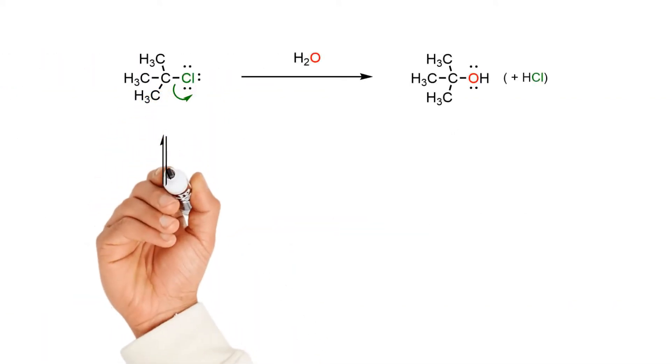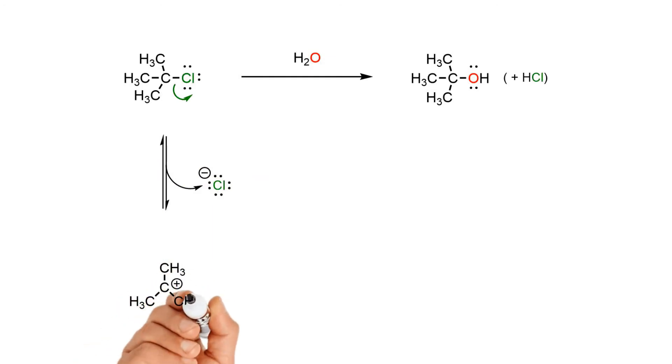Formation of the carbocation is rate-determining. The leaving group breaks away to produce the six-electron tertiary carbocation, which is stabilized by electron donation from the nine adjacent beta bonds through hyperconjugation.